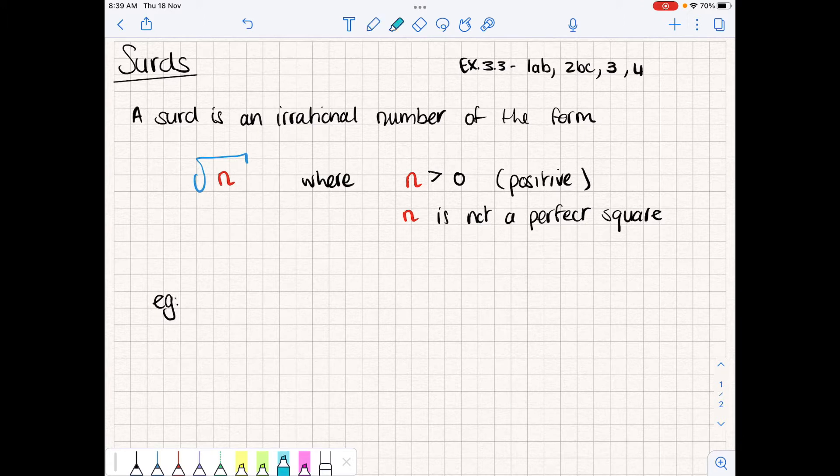What's an irrational number? An irrational number is any number that cannot be written as a fraction. They're usually numbers that have non-recurring decimals. It's an irrational number in the form of the square root of some number, and that number is always positive. And also, that number is never a perfect square.